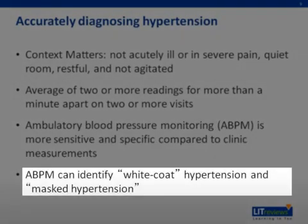Ambulatory blood pressure monitoring can identify white coat hypertension, which is when blood pressure is elevated in clinic but normal at home, and also masked hypertension, which is when blood pressure is elevated at home but normal in clinic.